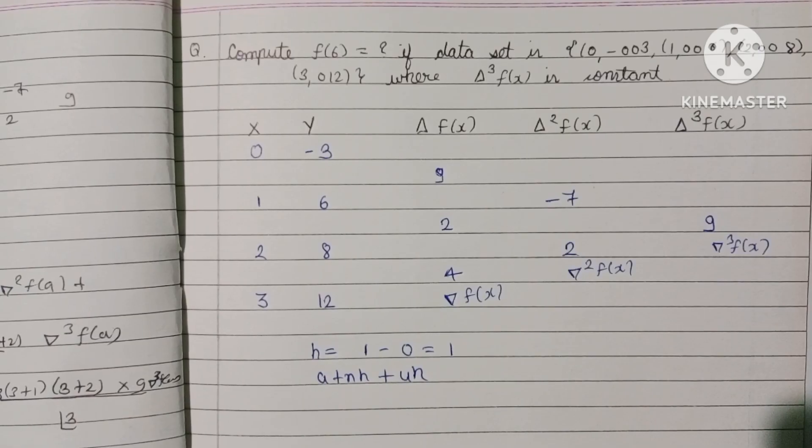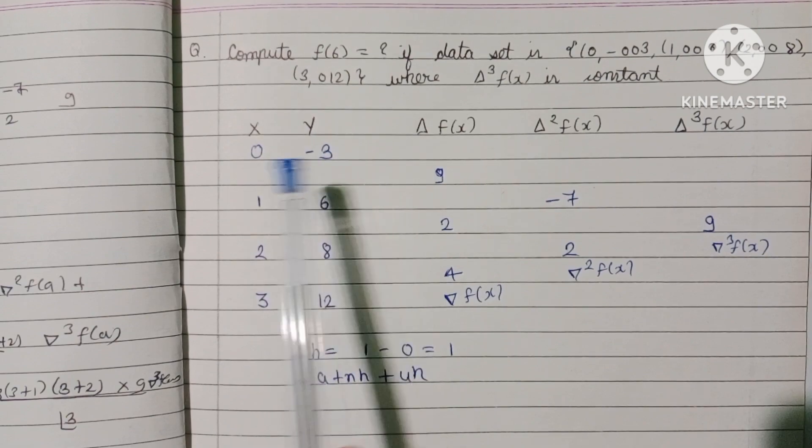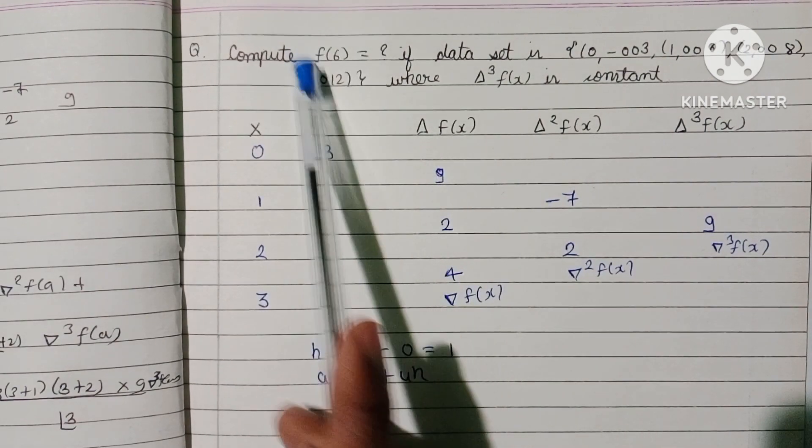Question number 4 part c: compute f of 6. The data set given is: for x=0 there is -3, for x=1 there is 6, for x=2 there is 8, and for x=3 there is 12, where the third-order difference of f of x is constant. We have to find the value of f of 6.